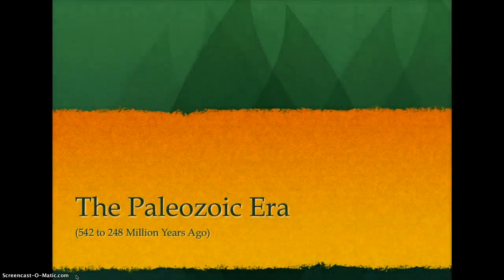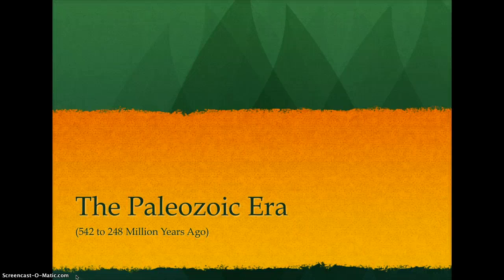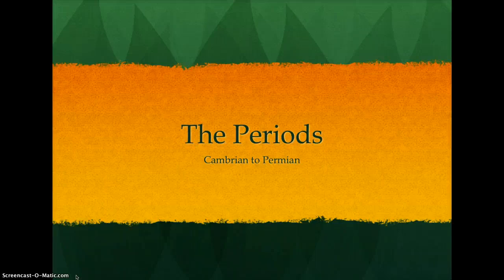The Paleozoic Era, beginning 542 million years ago and lasting about 300 million years, saw great diversity with several ice ages, evolutionary explosions, and multiple mass extinctions. Bracketed by the two supercontinents of Rodinia and Pangaea, the Paleozoic periods gave birth to many life forms, even some we still see today.